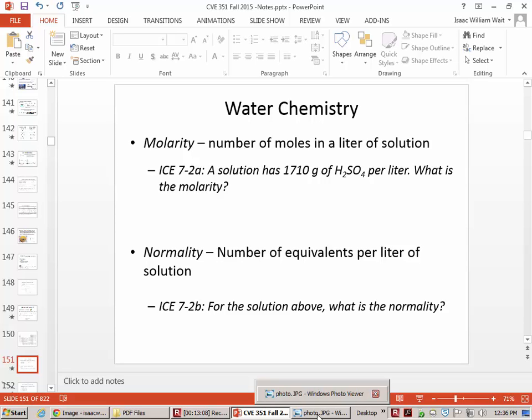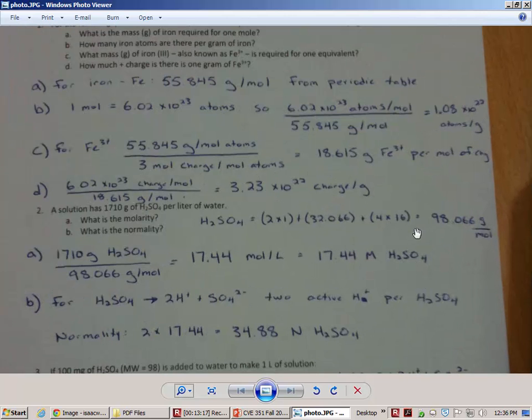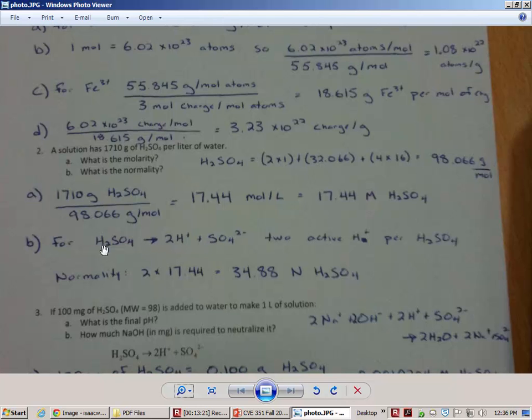If you have a problem where it's a different number of liters, like if it was this much H2SO4 added to two liters of water, then our molarity would be half of what it is here. Because we'd have to divide by two liters instead of by one. But in this case, it was just one liter of water. Now what about the normality? The number of equivalents per liter of solution. For that one, what we're going to want to do is take into account that when you have this acid disassociating, you get two hydrogen ions.